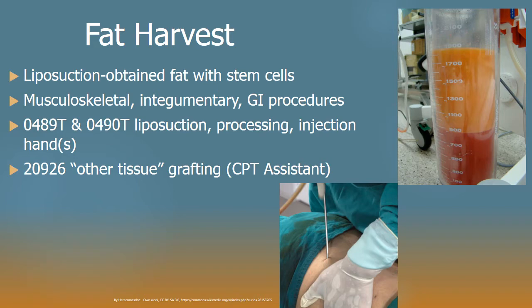Related somewhat in the reconstructive sense to flaps are fat harvests. This is an interesting and emerging technology wherein fat is liposuctioned out — not for cosmetic reasons, but as a source of stem cells. Fat is a cheap and abundant source, whereas harvesting bone marrow and extracting stem cells is laborious, expensive, and yields a small quantity. The stem cells have the ability to turn into any other tissue and can be used for healing injuries and surgeries on the musculoskeletal system, integumentary, GI tract, and for autoimmune and connective tissue disorders.